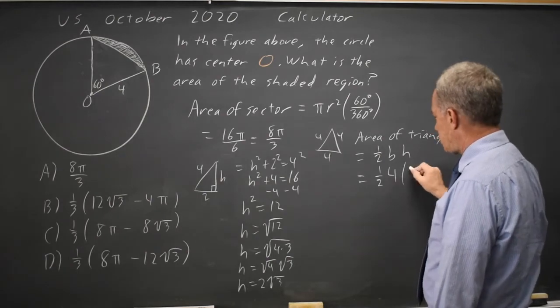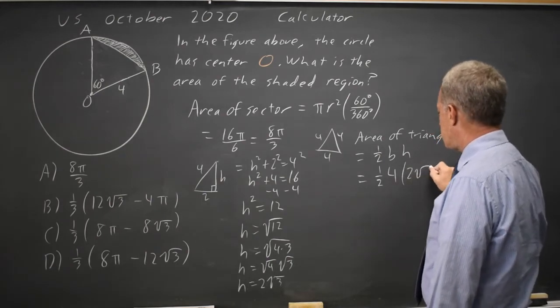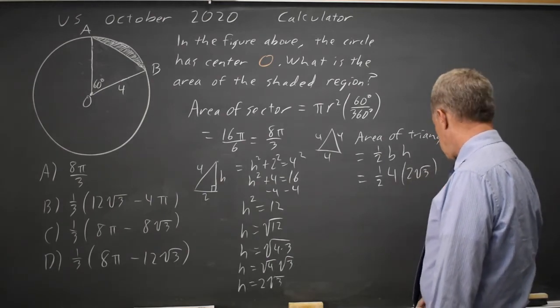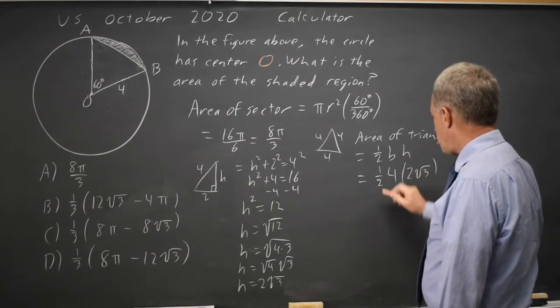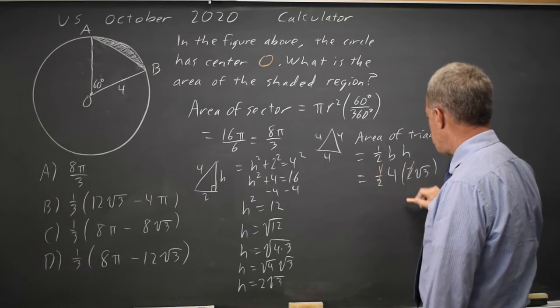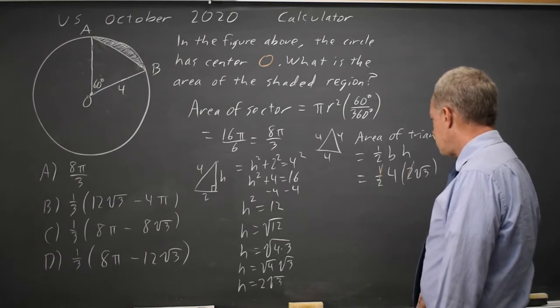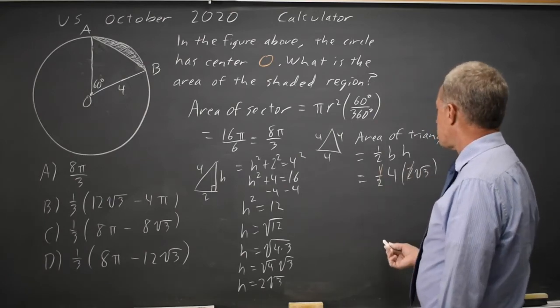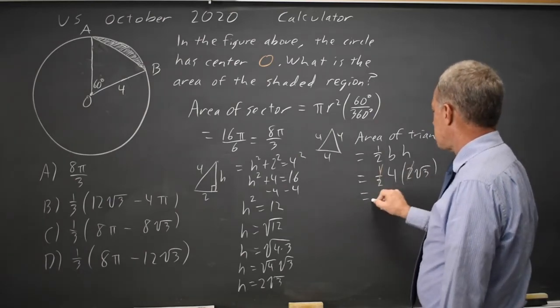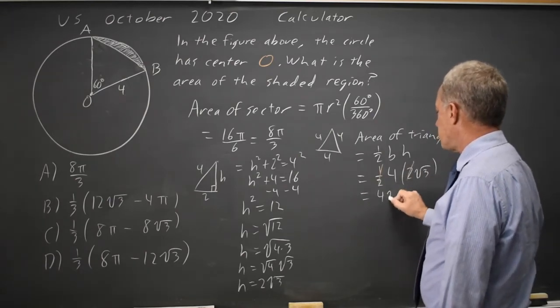And the height is 2 root 3. One half times 2 is 1, so the area of the triangle is 4 root 3.